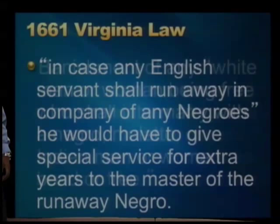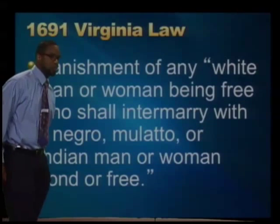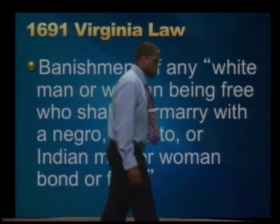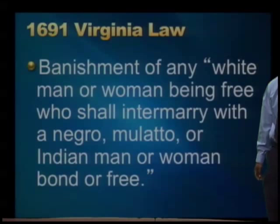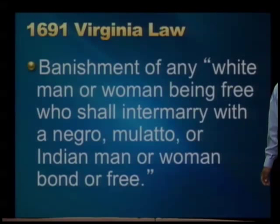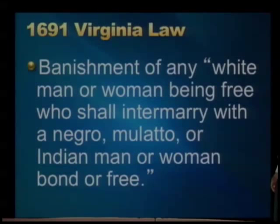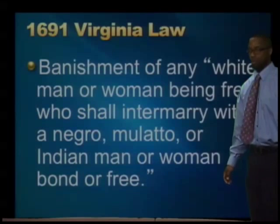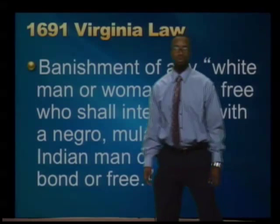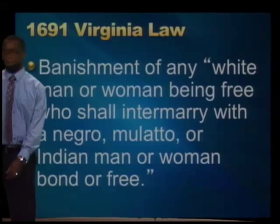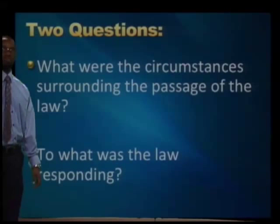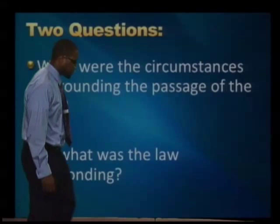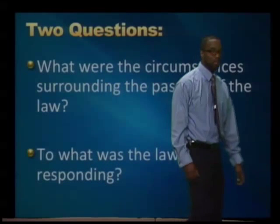Another law. 1691 — 30 years later — this law was passed by the colonial legislature, the House of Burgesses in Virginia: banishment of any white man or woman being free who shall intermarry with a Negro, mulatto, or Indian man or woman, bond or free. If we return to our two questions: what were the circumstances surrounding the passage of this law, and to what was this law responding?